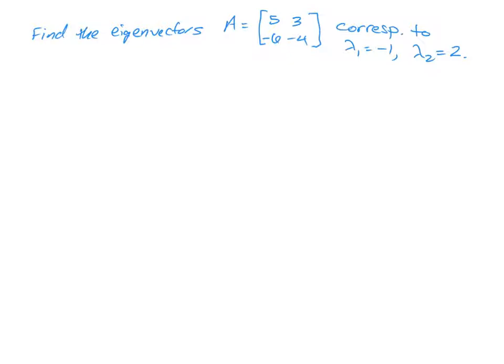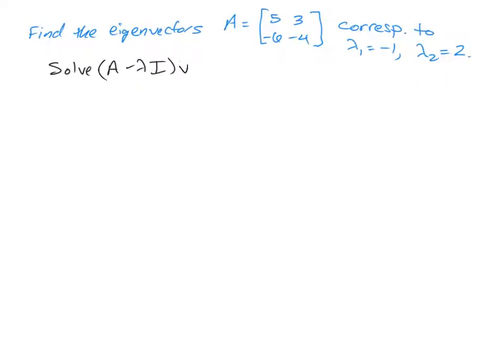So the first thing we're going to do is we have to solve for each eigenvalue the following system. We're going to solve A minus lambda I times some unknown vector V is equal to the zero vector. And then in doing so, we're going to now do this for each value of lambda.